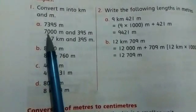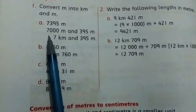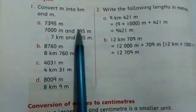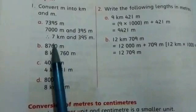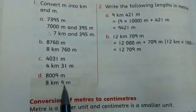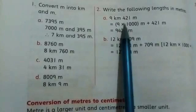So we will make 7000 meters into 7 kilometers. The remaining meters will remain as meters. So what will it be? 8 kilometers 760 meters, 4 kilometers 31 meters, 8 kilometers 9 meters, 9 kilometers 421 meters.